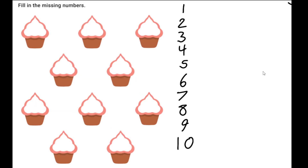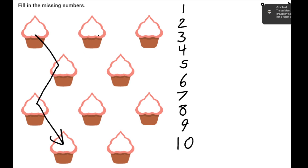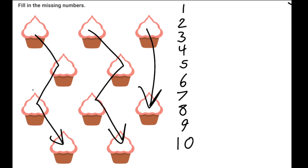Let's try a new problem. Fill in the missing numbers. Now, I'm going to notice that there are no numbers at all, so I can go in whatever order I want. But what I do realize is that it's a little bit of a zigzag. If I count down, that is not necessarily going to give me the order that I want. Notice how the counting could be a little bit off.